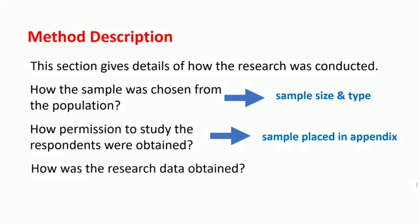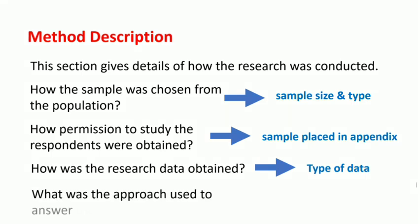It also contains information on how your research data was obtained. That is, it must also contain the type of data used. This is an important criteria because it gives you the marks sought in this section. Finally, this section should also include what was the approach used to answer the research question.